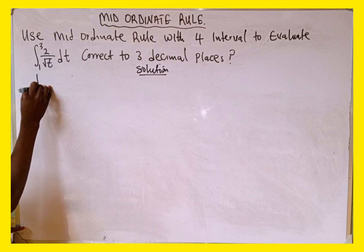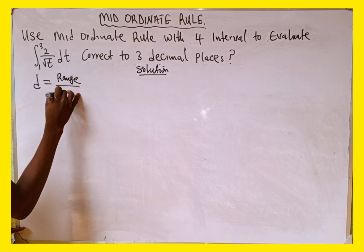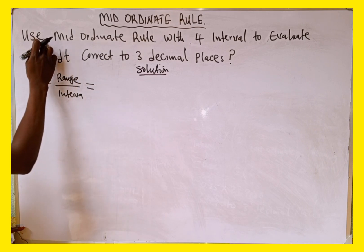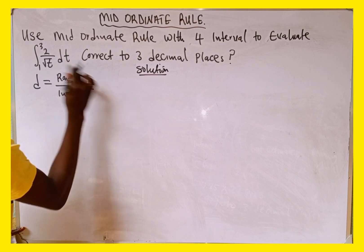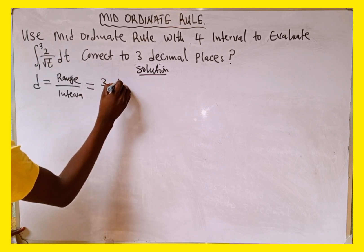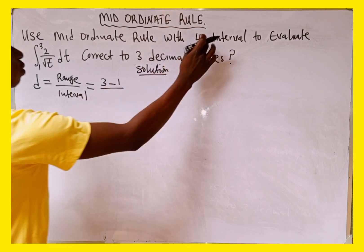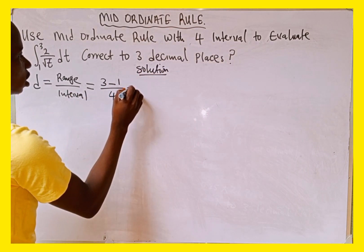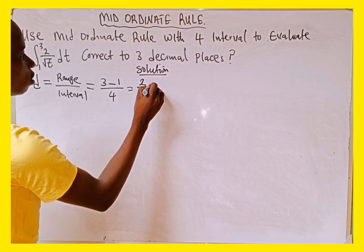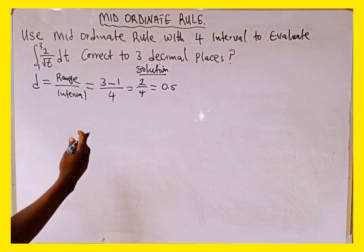The width of the interval is denoted as small letter d, which is equal to the range over the number of intervals. The range is the difference between the upper limit and the lower limit: 3 minus 1, all over 4 intervals. So d = 2 divided by 4, which equals 0.5.